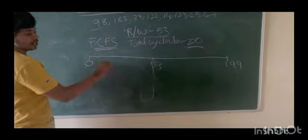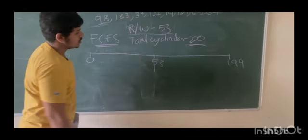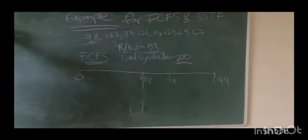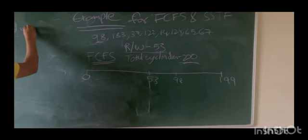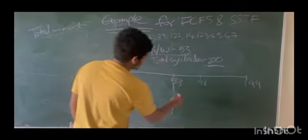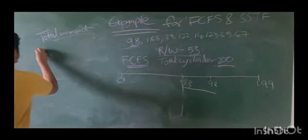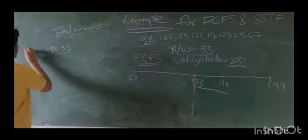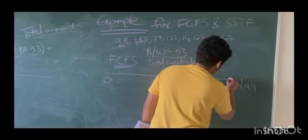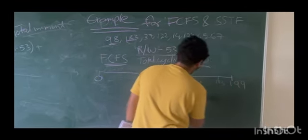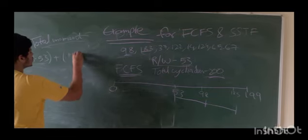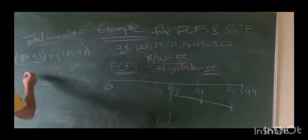The first cylinder is 98. So from 53 to 98, that is 98 minus 53. Second one is 183, so from 98 to 183, that is 183 minus 98. Next one is 37, so from 183 to 37, that is 183 minus 37.